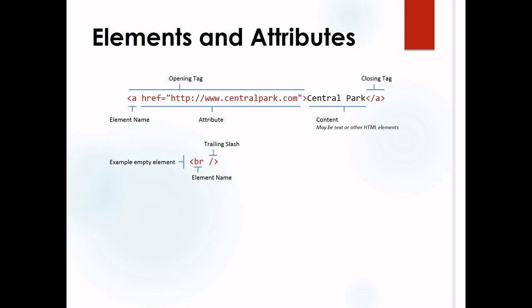When writing elements and attributes, consider this example: the anchor tag. You start with an angle bracket — that is the tag. Inside it, 'a' is the element name. After that you write href, which is the attribute, followed by equals and double quotes with the attribute value, such as http://www.centralpark.com. Then you write the content, followed by the closing tag — slash a.